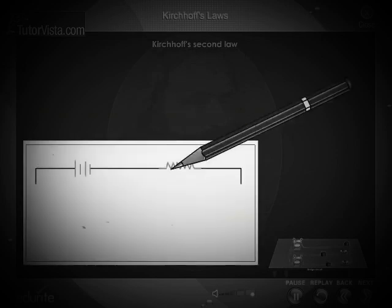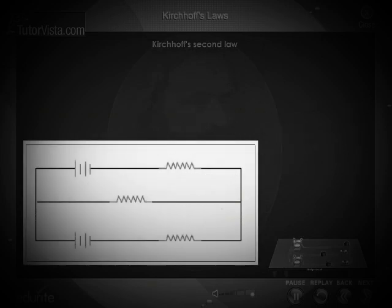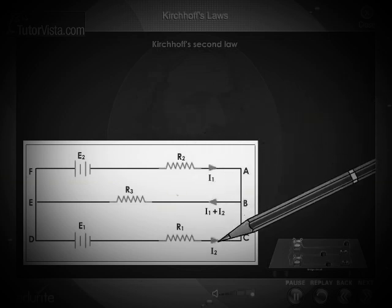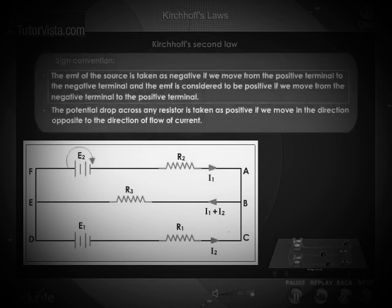Let us see how the loop rule is used to solve the given bridge circuit. First, draw a circuit diagram to represent the circuit. Mark the direction of flow of current through each branch of the circuit, then apply the sign convention.